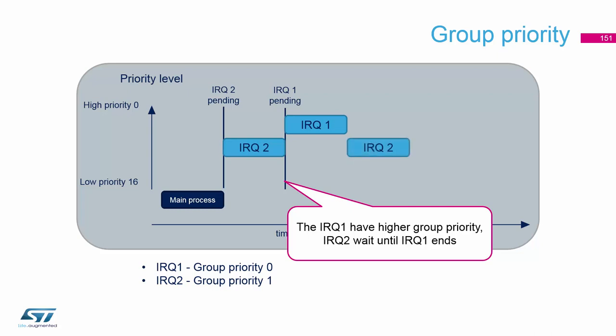The higher priority interrupt executes before the low priority interrupt, and then we return to the low priority interrupt and back to the main process. This is called preemption — preemption priority. Preemption means that the interrupt with the higher priority can stop the interrupt with the lower priority and execute itself.